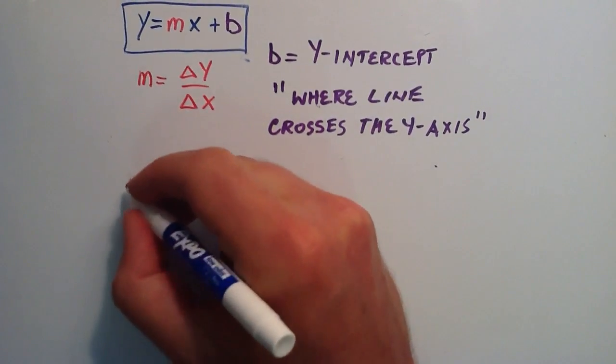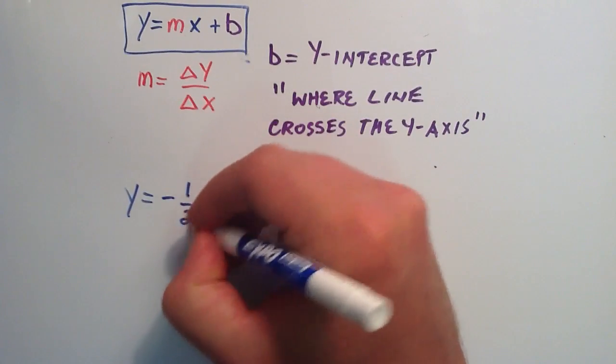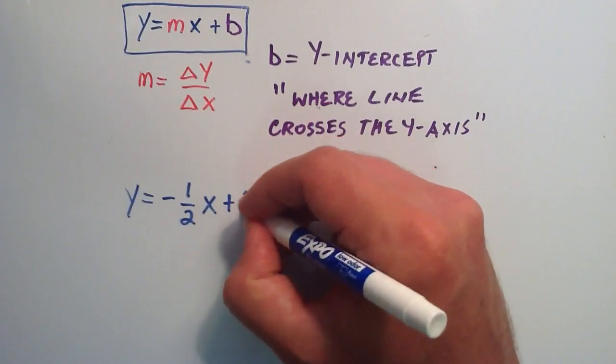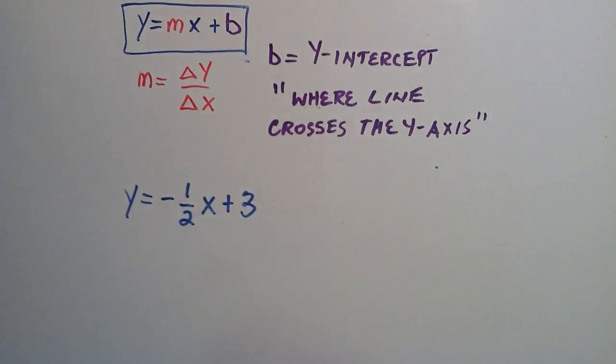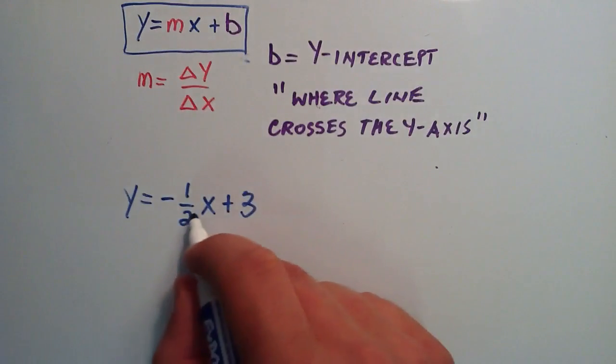This time, let's do y equals, we'll do a negative slope. We'll do negative one-half x. And this time, we'll do plus three for our y-intercept.